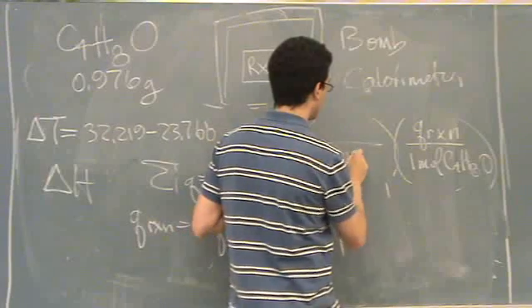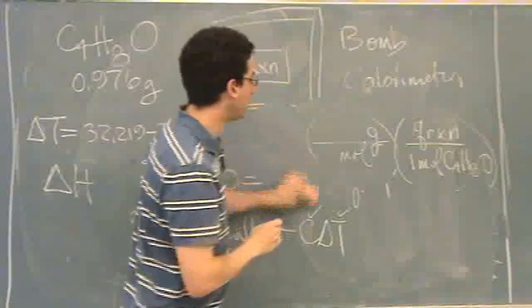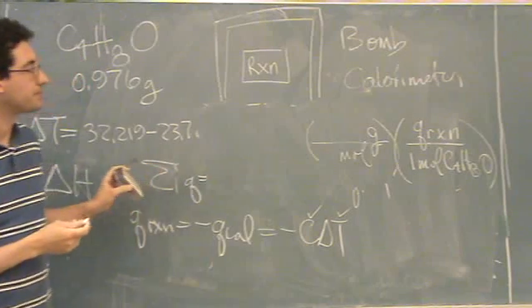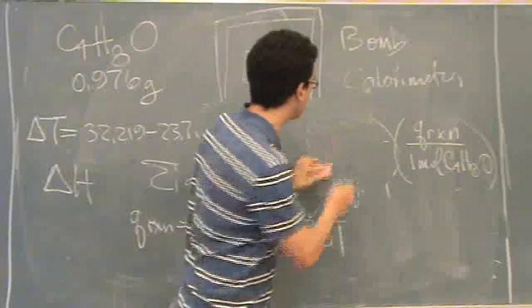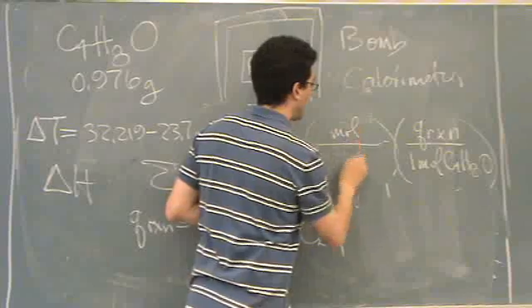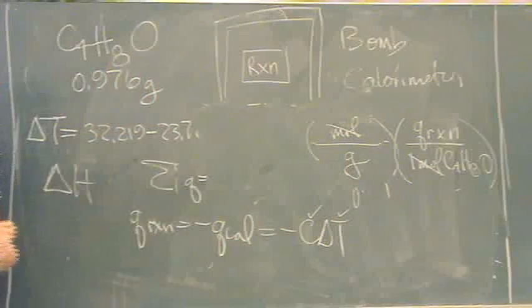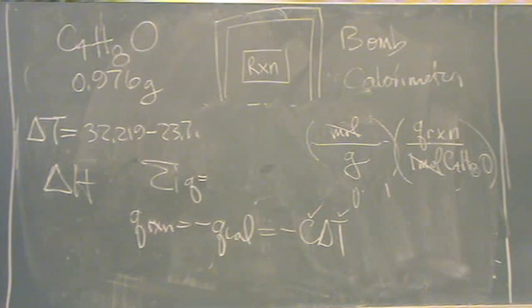I'm going to change this to grams by multiplying by the molar mass. And then what am I going to do? Oh, I got this upside down, by the way. I need to make sure the moles cancel. There's your molar mass. I'm going to do one more multiplication.